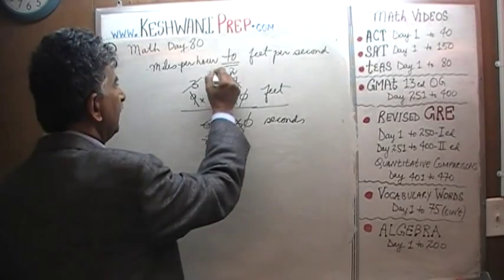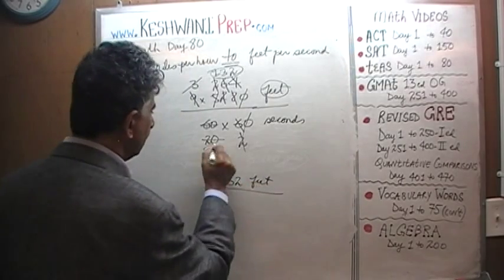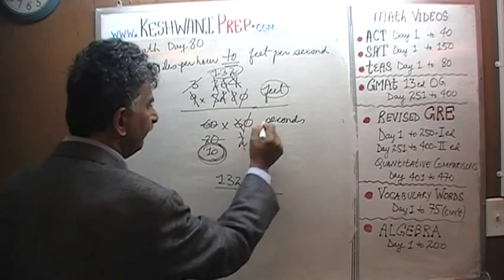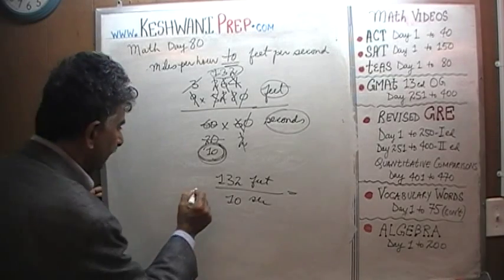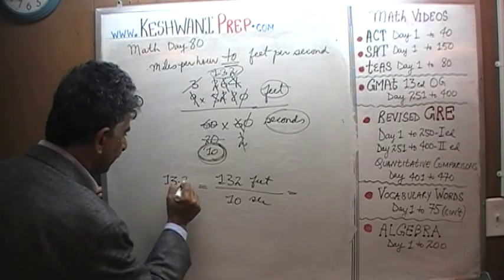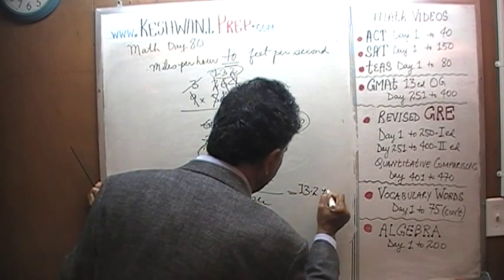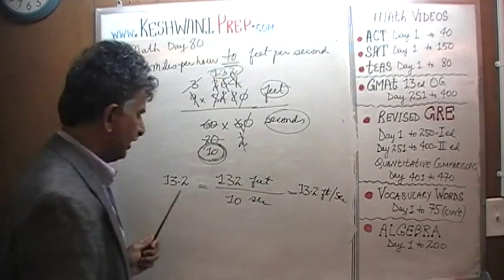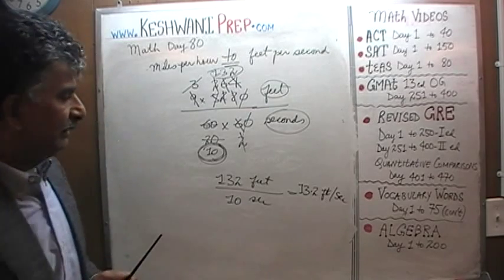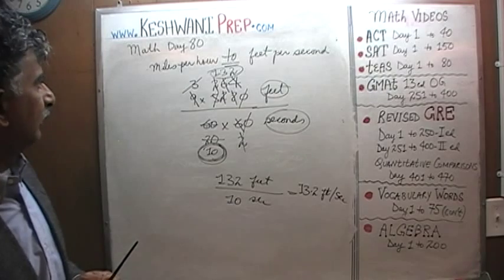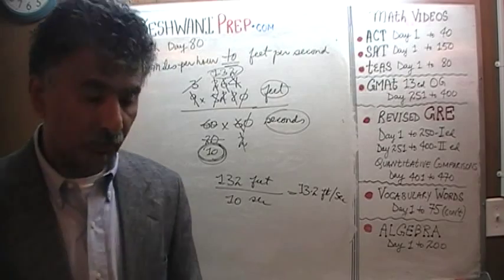132 feet over - don't forget this 10 here - 10 seconds. 132 divided by 10 is simply going to be 13.2. 13.2 feet per second. That's it, we're done. The answer is 13.2 feet per second. See you tomorrow, bye.